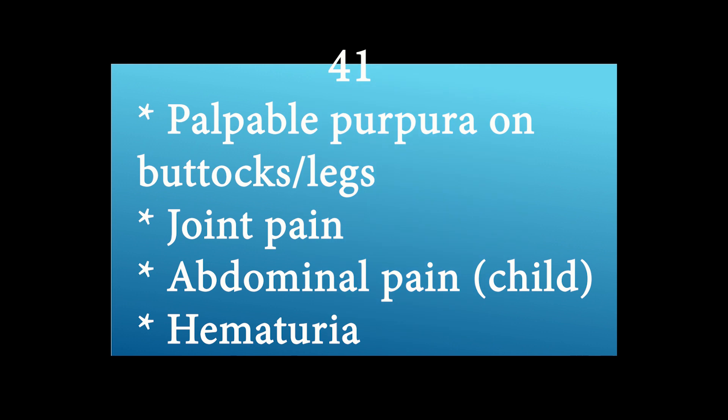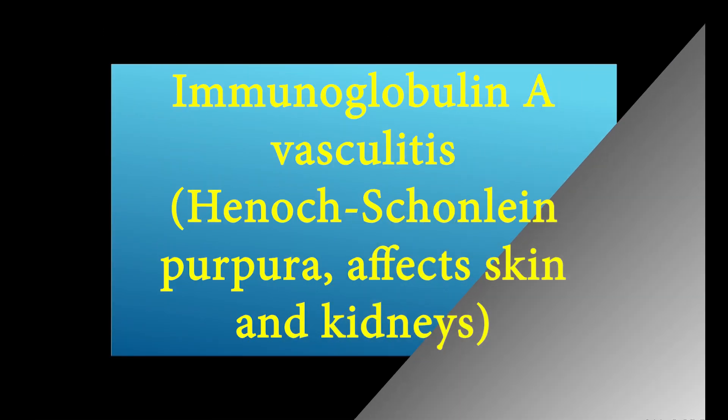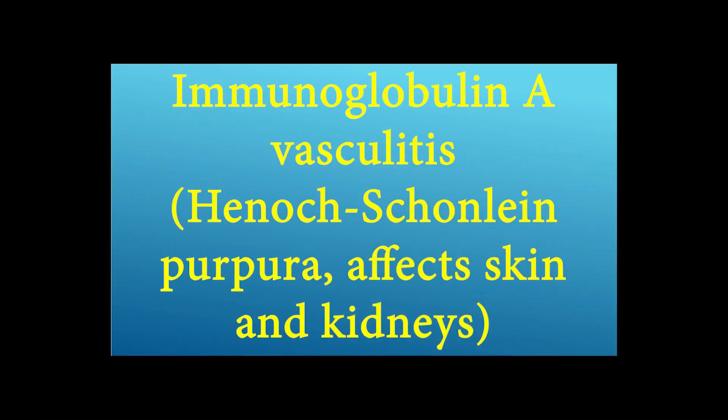Palpable purpura on buttocks and legs, joint pain, abdominal pain in a child, and hematuria — what is the diagnosis? Henoch-Schönlein purpura, also called IgA vasculitis. It affects skin and kidneys.